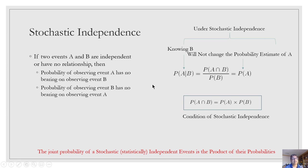This independence assumption is often used in civil engineering, especially when joint probabilities are difficult to construct — even though events are not always fully independent. The rule can be extended to multiple events: P(A ∩ B ∩ C) = P(A) × P(B) × P(C). Here we just show the bivariate case to keep things simple.